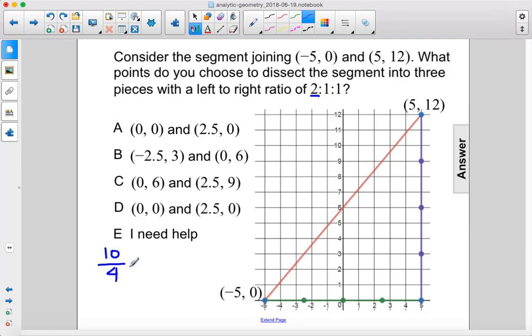10 divided by 4 gives us 5 over 2 or 2.5. So we see 1, 2.5, 1, 2.5. These are all 2.5 across.